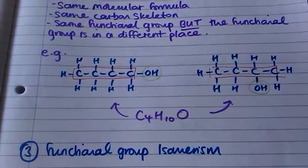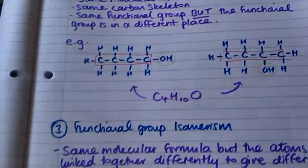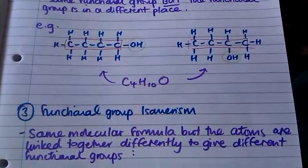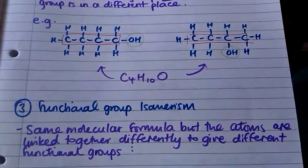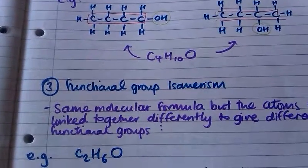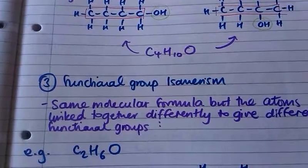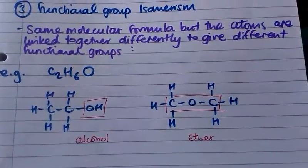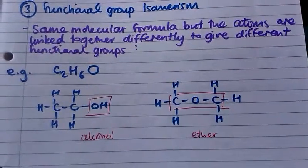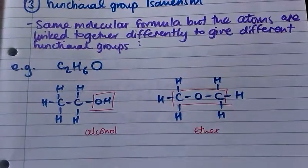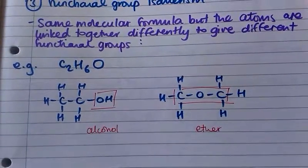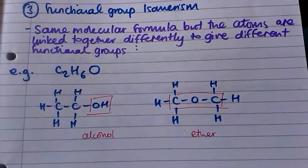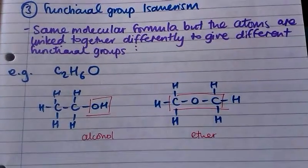Lastly, we have functional group isomerism. Functional group isomers have the same molecular formula, but the atoms are linked together differently to give different functional groups. For example, with the formula C2H6O, on the left we have an alcohol and on the right we have an ether. Both have the same molecular formula but different functional groups.